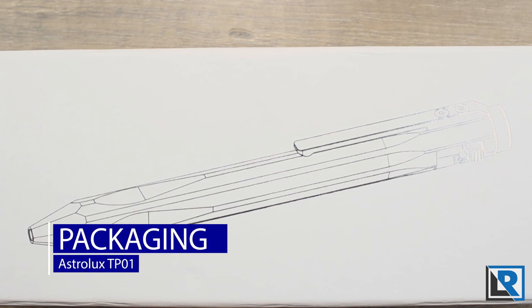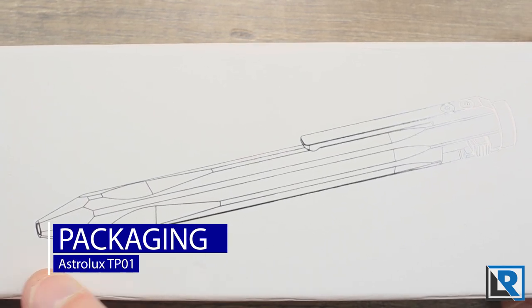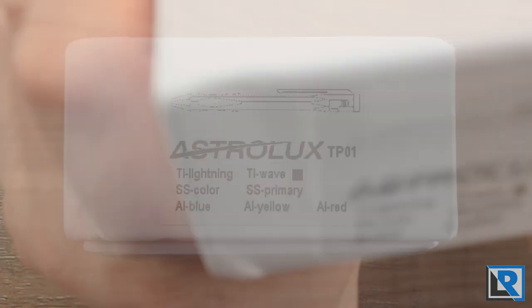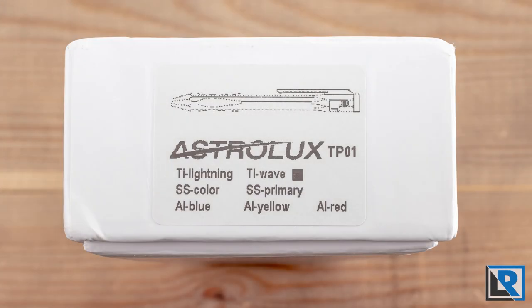Here is the packaging that the pen comes in. It's a white cardboard box with a silver outline of the pen on it. On the end cap, I'll roll in a picture - it tells you what color and option the pen is in.